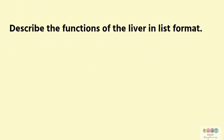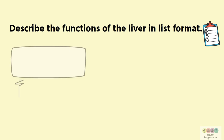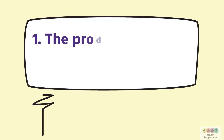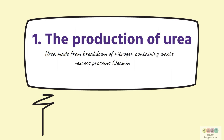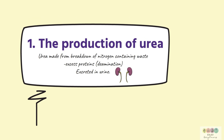You must be able to describe the functions of the liver in list format. Number one is the production of urea. Urea is formed in the liver from the breakdown of nitrogen-containing waste — specifically the breakdown of excess proteins in a process called deamination — and urea is excreted in the urine.